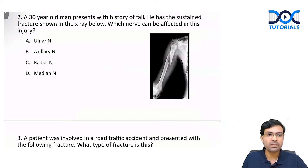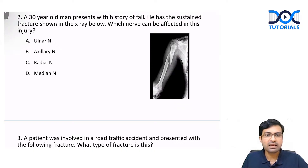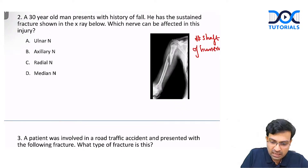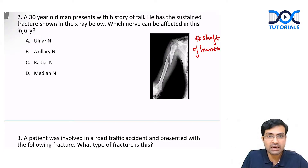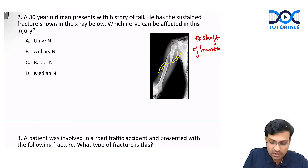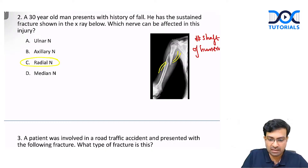Next question: a 30-year-old male presents with history of fall and has sustained a fracture shown in the X-ray. The X-ray shows a fracture in the shaft of humerus. When there is a fracture like that, there is always a risk of injuring the radial nerve, which winds around the shaft of humerus in the spiral groove. So fracture shaft of humerus is associated with radial nerve injury.